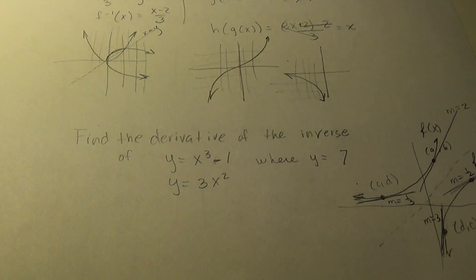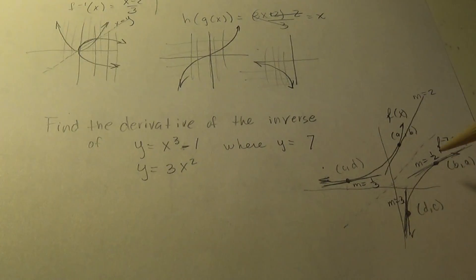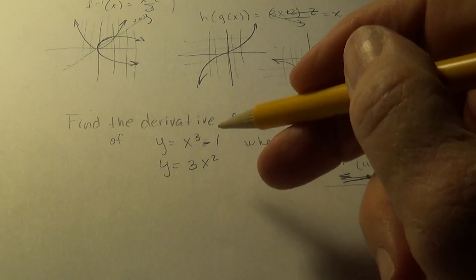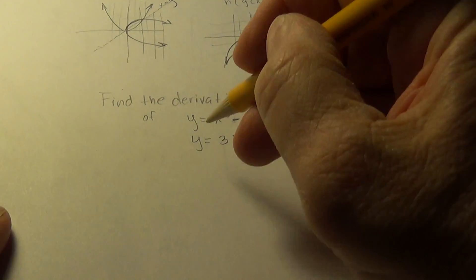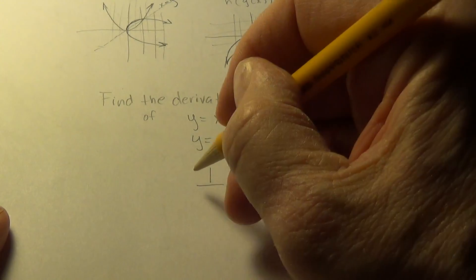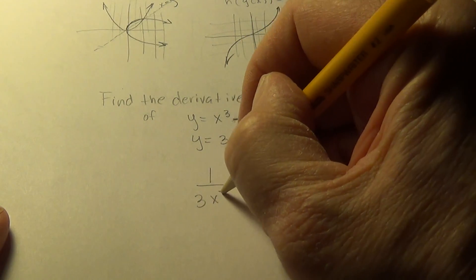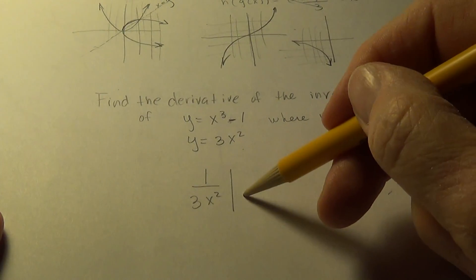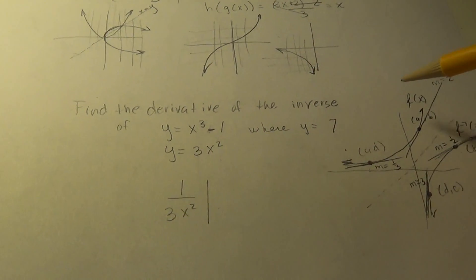Then, we know the inverse function is going to be the reciprocal of that. It's going to have the derivative. It's going to be a reciprocal of that. The thing is, where will I evaluate that? What number?